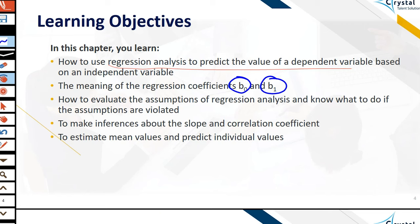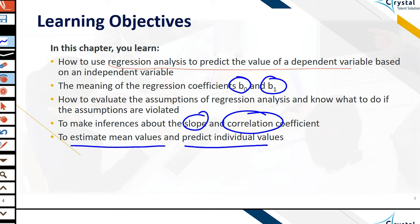Then we will make inferences about the slope and the correlation coefficient. After building a good model for our observations, we will estimate the mean values and use it to predict individual values — to predict what will happen at a given time, or if we have other observations, we can predict what the outcome of the dependent variable would be for a given value of the independent variable.